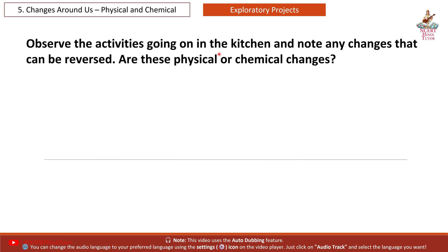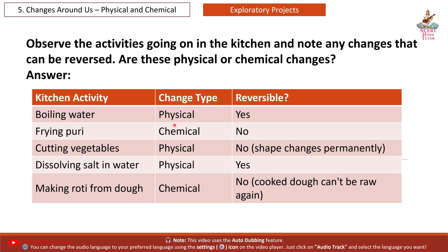Observe the activities going on in the kitchen and note any changes that can be reversed. Are these physical or chemical changes? Answer — Boiling water: Physical, Reversible — Yes. Frying puri: Chemical, Reversible — No. Cutting vegetables: Physical, Reversible — No, shape changes permanently. Dissolving salt in water: Physical, Reversible — Yes. Making roti from dough: Chemical, Reversible — No, cooked dough cannot be raw again.